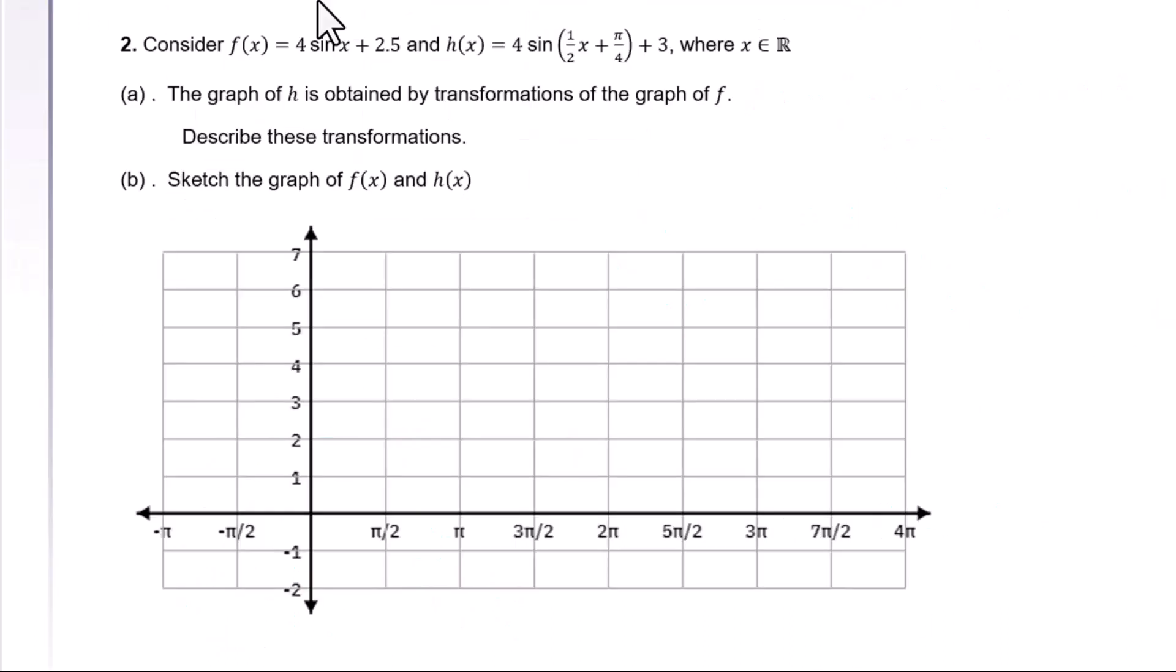Question 2: Consider f(x) = 4sin(x) + 2.5 and h(x) = 4sin[(1/2)x + π/4] + 3, where x is all real numbers. Part A: The graph of h is obtained by transformations of the graph of f. Describe these transformations.